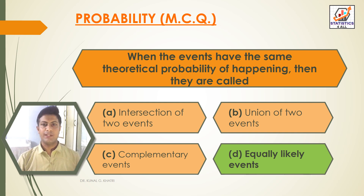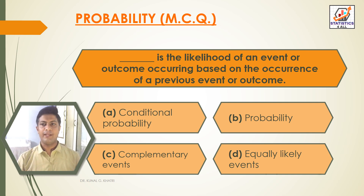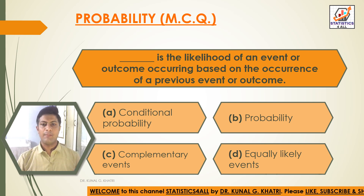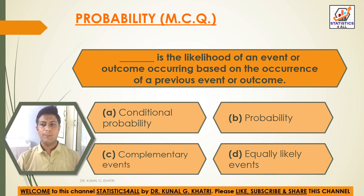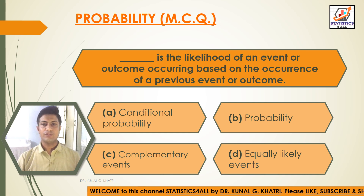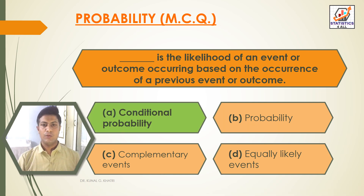Next question: dash is the likelihood of an event or outcome occurring based on the occurrence of a previous event or outcome. Option A: conditional probability. Option B: probability. Option C: complementary events. Option D: equally likely events. The answer is Option A — conditional probability.